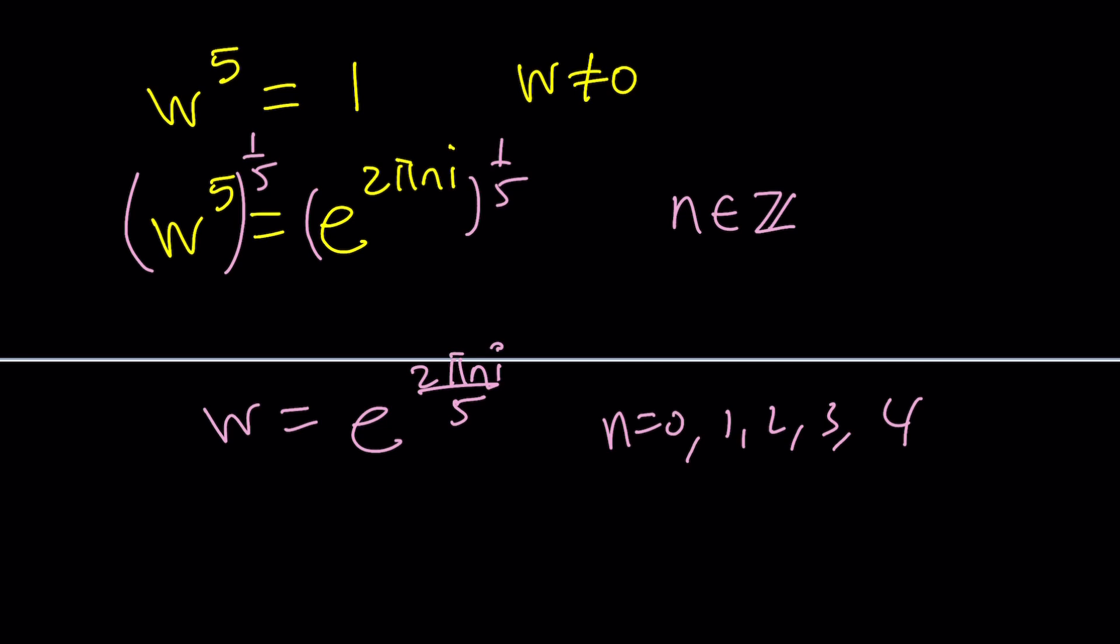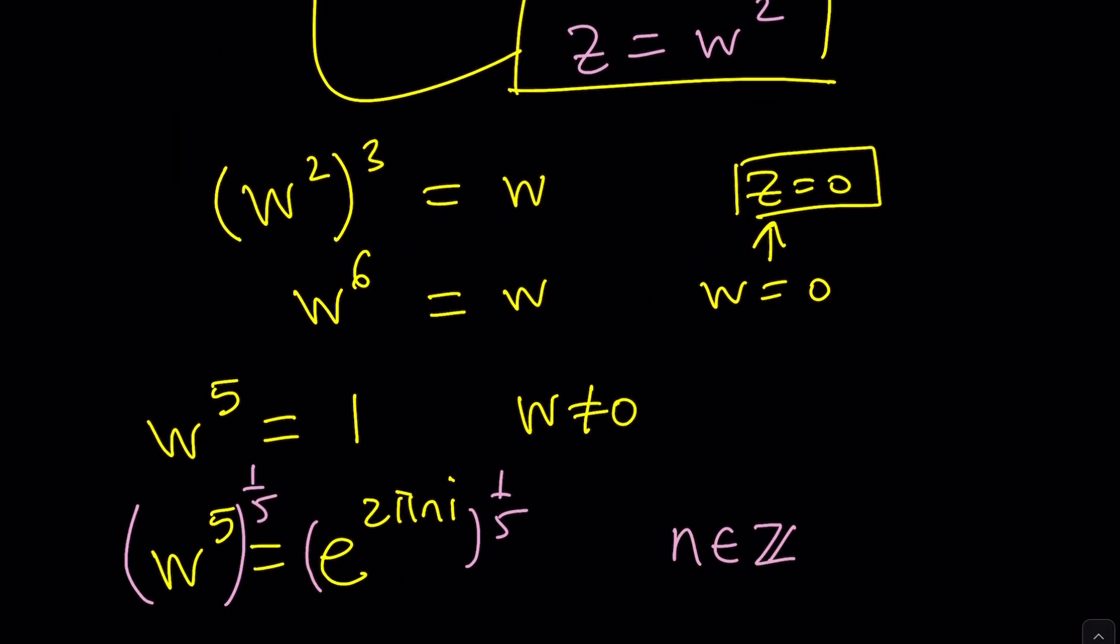You only need 5 values, by the way, because when you hit the next value, like if n is equal to 5, you're going to go back to the same thing as n equals 1. Makes sense? So it's just going to repeat. It's a cycle. Cool. Now, if you replace n with 0, you get w equals e to the 0, which is 1. And then, so 1 is a solution. And w equals 1 implies what? W equals 1 implies that z is equal to 1.